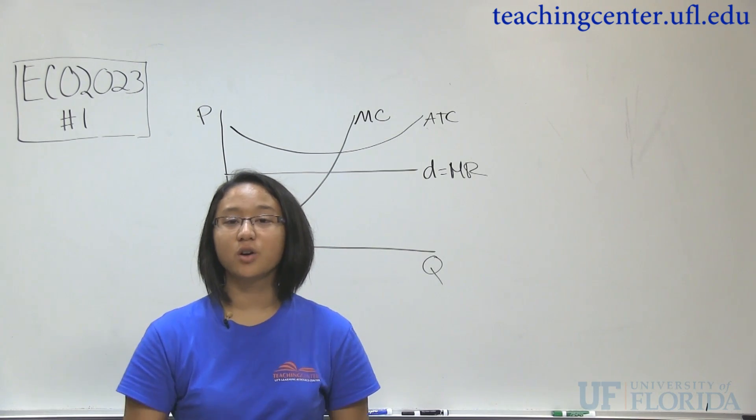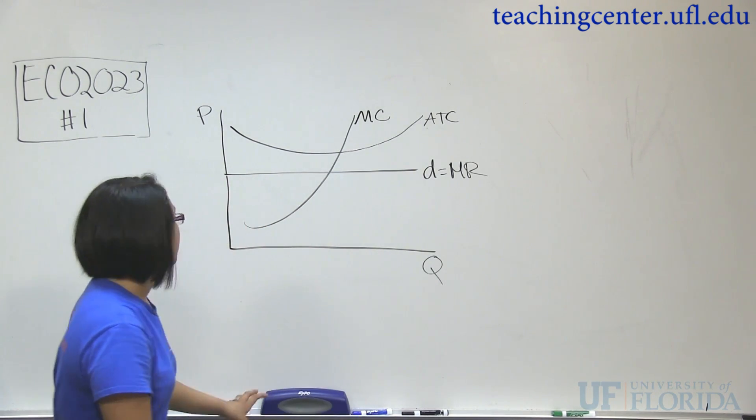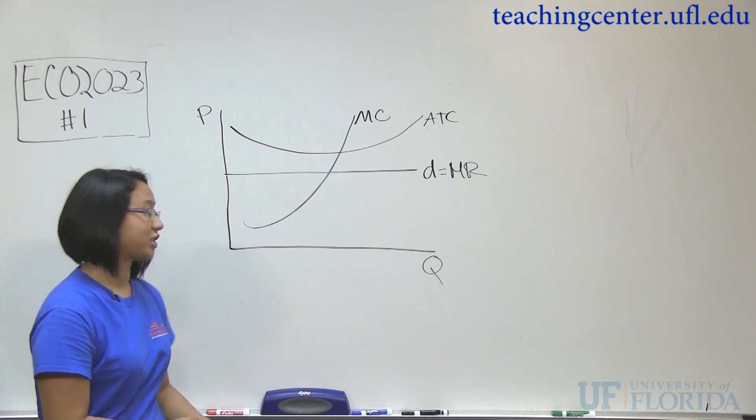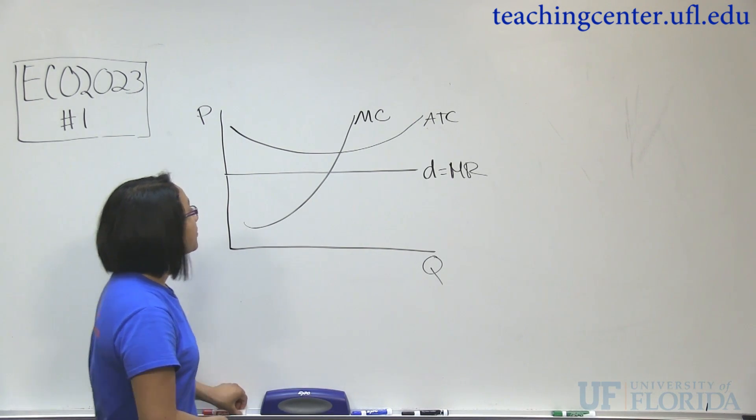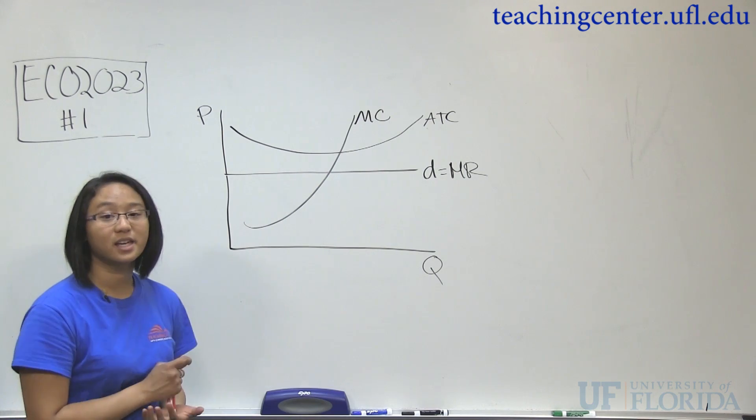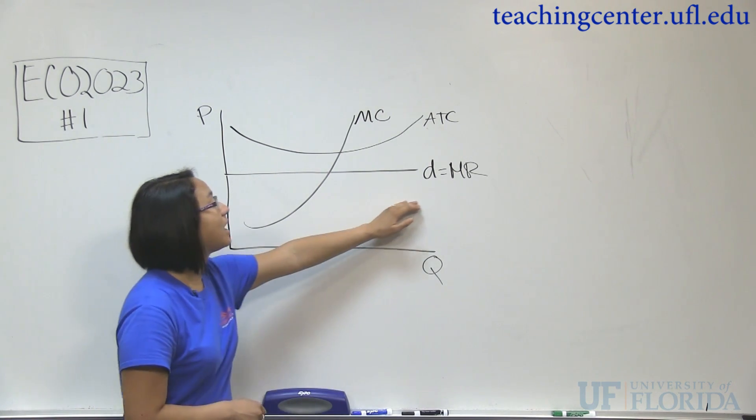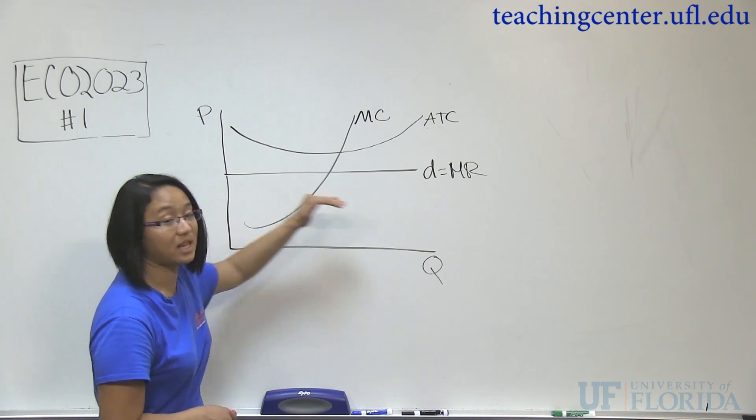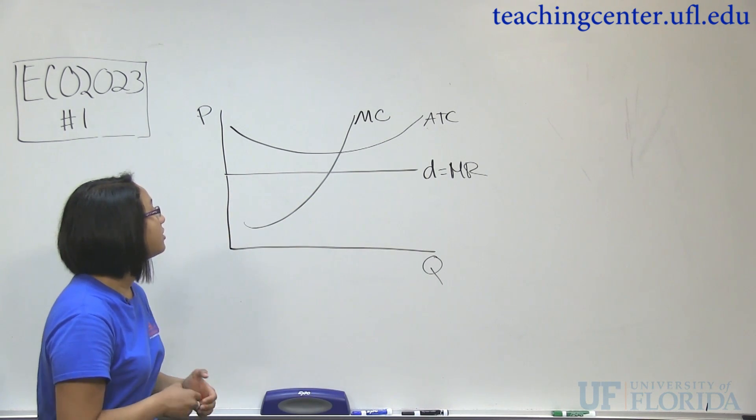So whenever you go to these questions, try to think of the graph. So here's your graph for a perfectly competitive firm, and you'll need to know this for the exam for sure. So with a perfectly competitive firm, one key thing about the graph is that demand is equal to marginal revenue. And that the demand curve is a flat, horizontal curve.